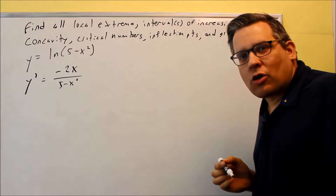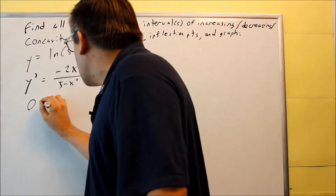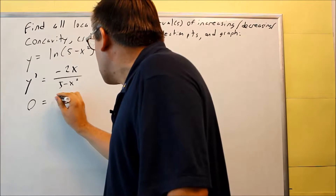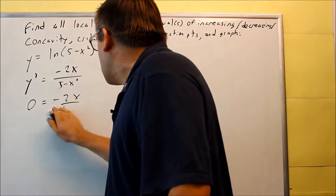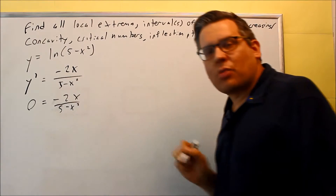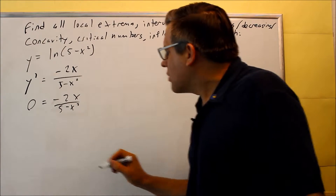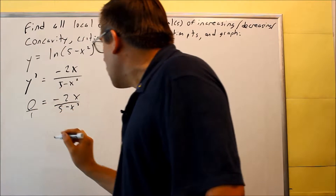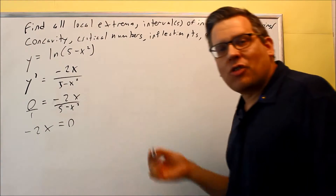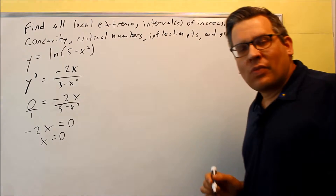The other way to find critical numbers is to take the first derivative and set it equal to 0. So 0 equals negative 2x over 5 minus x squared. We're going to cross-multiply, which gives us negative 2x equals 0. Dividing both sides by negative 2, we get x = 0 as the critical number.